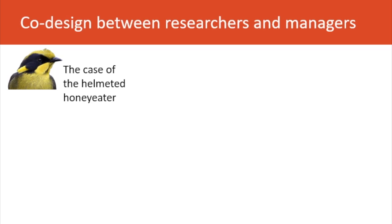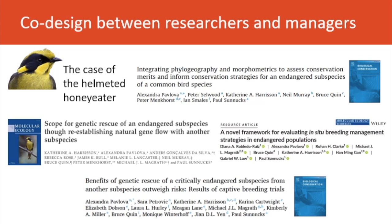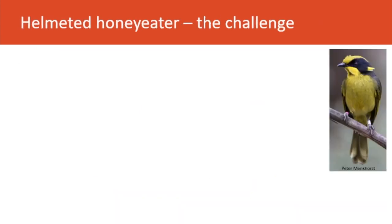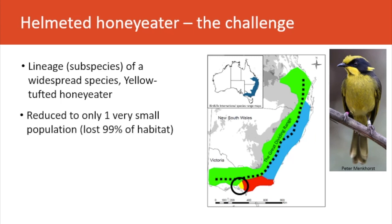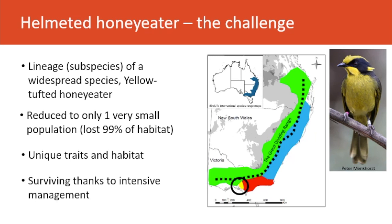I want to make an example of the case of the helmeted honeyeater. Here are some of the publications from this program — about half the authors are wildlife managers and about half are researchers. The helmeted honeyeater is a subspecies of the widespread yellow-tufted honeyeater, with a very small restricted distribution seen in the black circle on this map. It was reduced to only one tiny population, having lost 99% of its habitat through human habitat alteration. It has unique traits and habitat, and survives only thanks to intensive management.